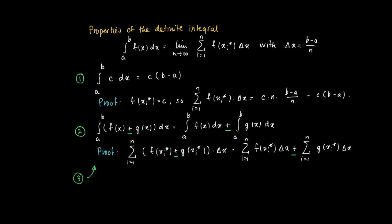The third property is that the same holds for minus signs. So instead of having a plus sign, we could as well have minus signs. The integral from a to b of f(x) minus g(x) dx equals the integral from a to b of f(x) dx minus the integral from a to b of g(x) dx.